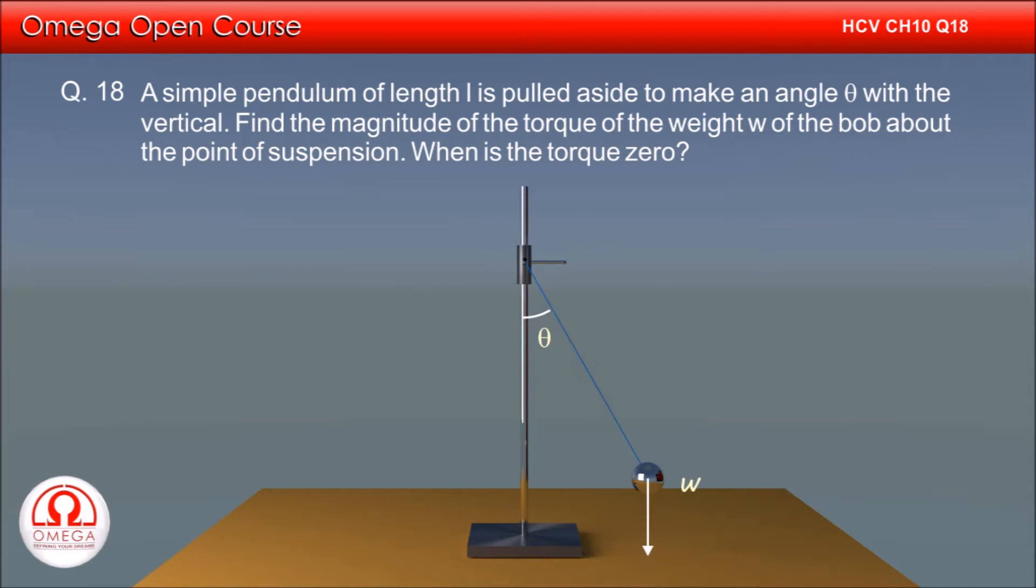A simple pendulum of length L is pulled aside to make an angle theta with the vertical. Find the magnitude of the torque of the weight W of the bob about the point of suspension. When is the torque zero?